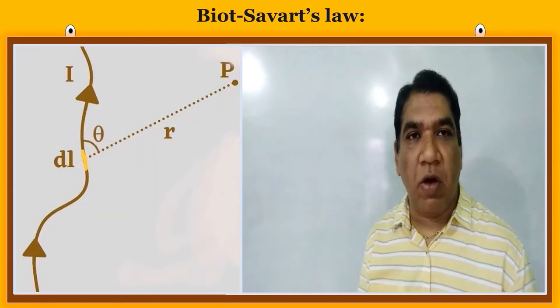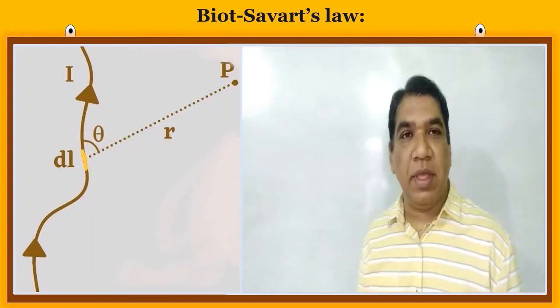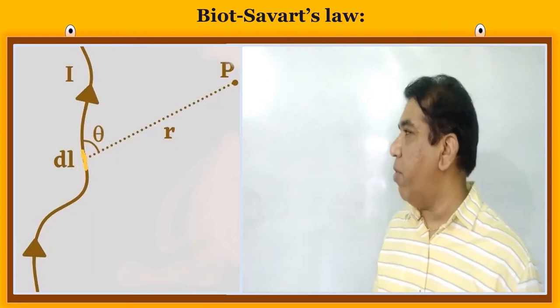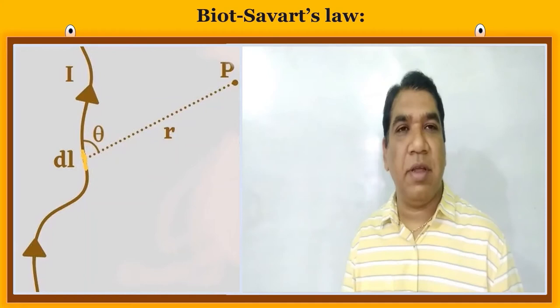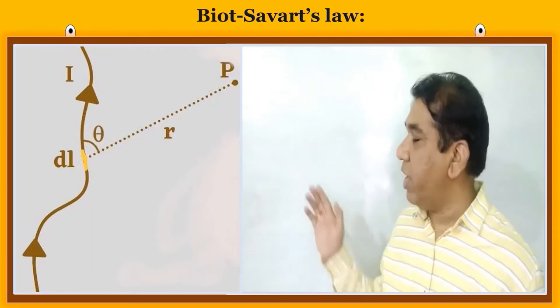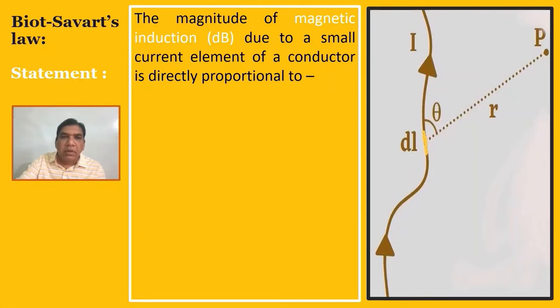To understand this law, we consider a conductor of any shape carrying current I and a current element of length dl. Let P be any point at a distance R from the current element. Theta is the angle between the direction of current and the line joining point P and the current element.